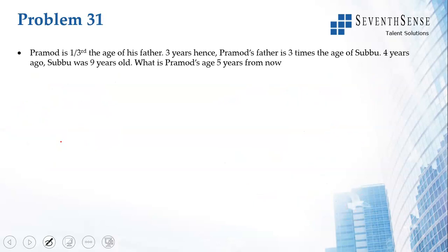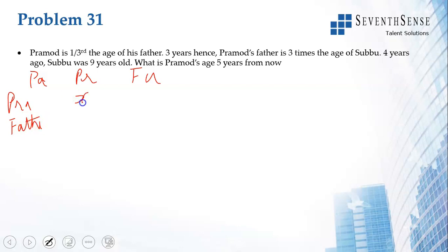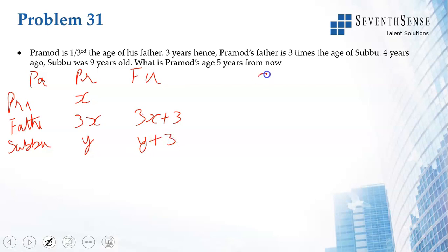Pramodh is 1/3rd the age of his father, meaning father is 3 times Pramodh's age. Let Pramodh be x and father be 3x. Three years hence (in the future), Pramodh's father is 3x + 3. He will then be 3 times the age of Subhu. Taking Subhu's current age as y, three years hence Subhu is y + 3. So 3x + 3 = 3(y + 3).